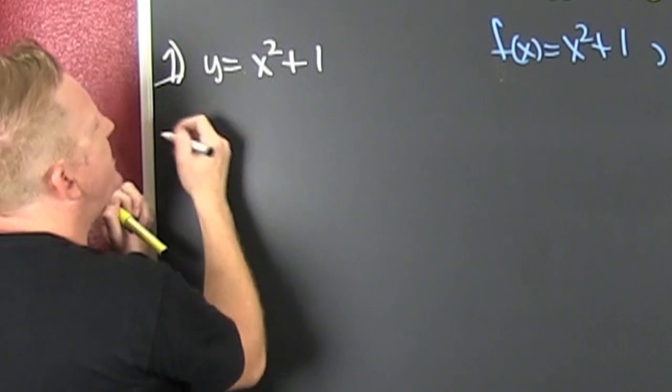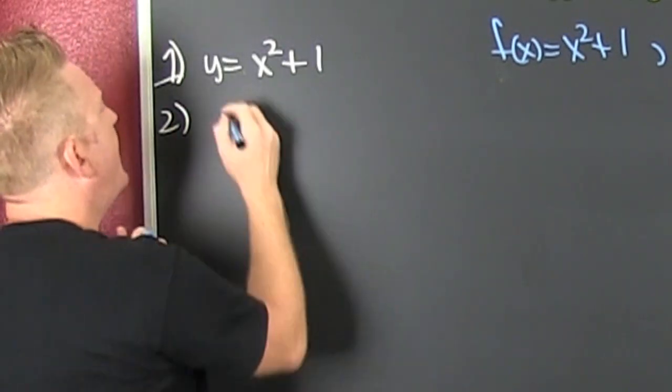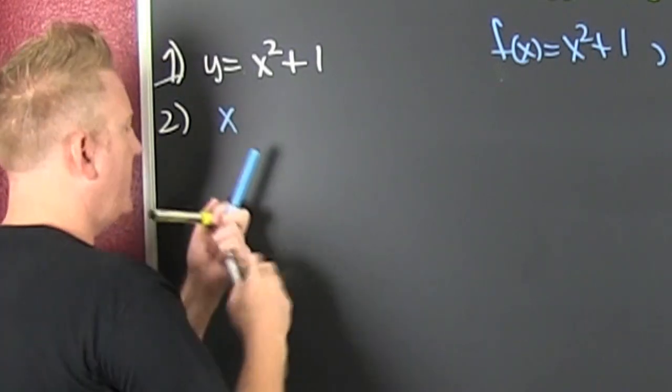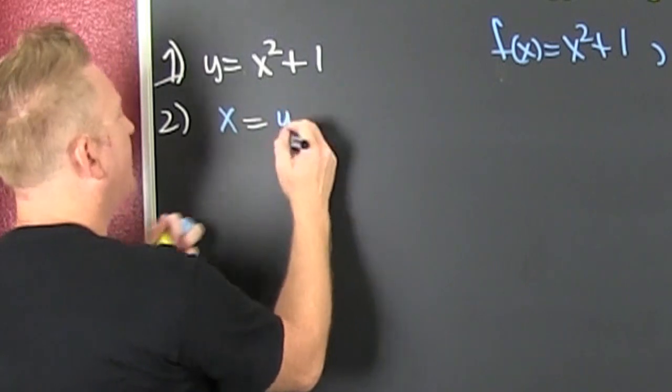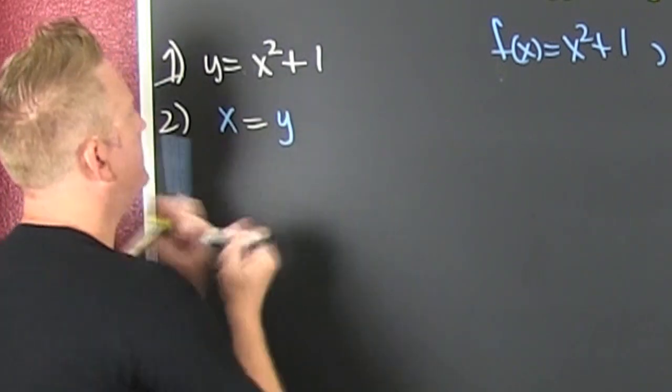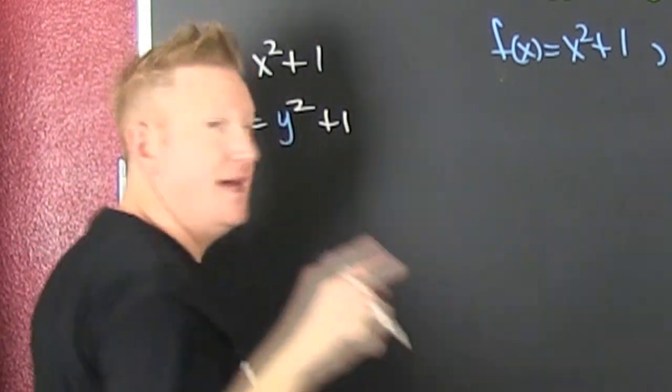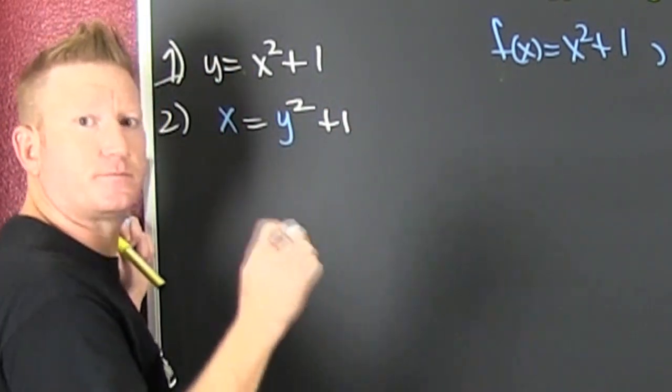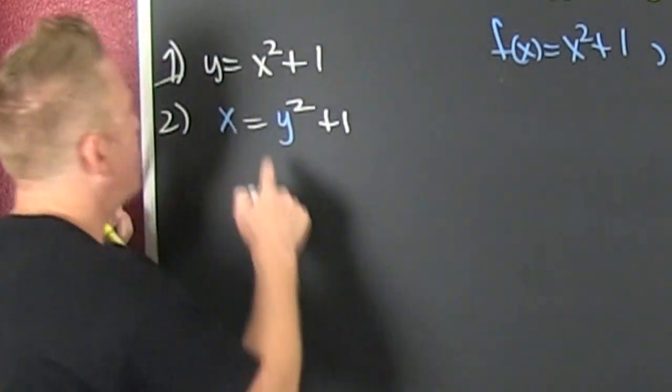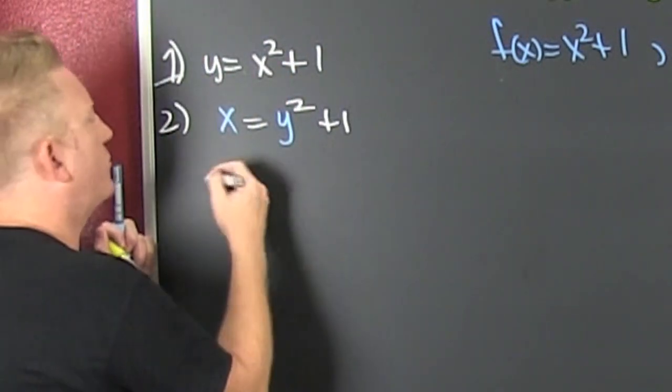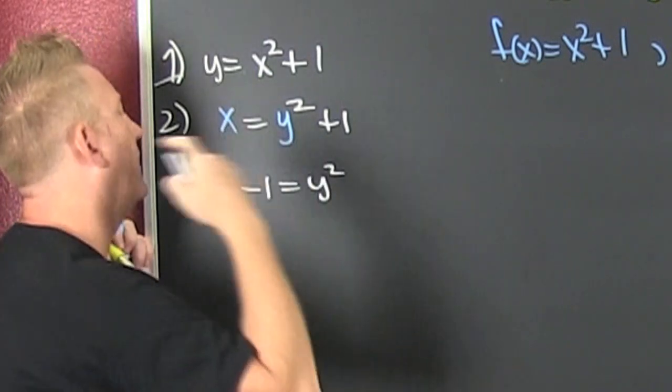Step two: interchange x and y. So now I have x is equal to y squared plus one. Subtract one from both sides, so x minus one is equal to y squared.